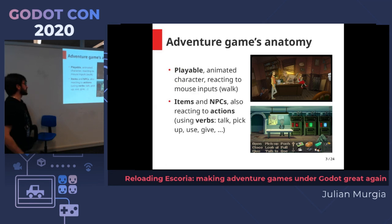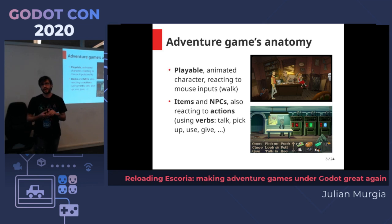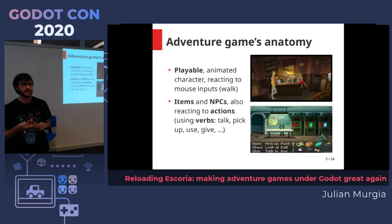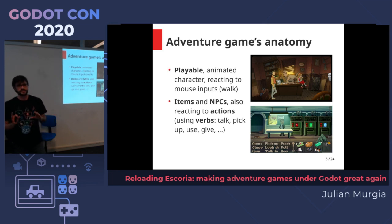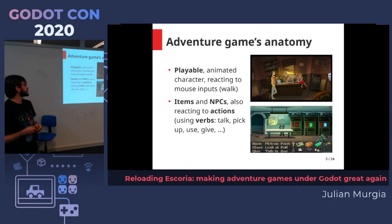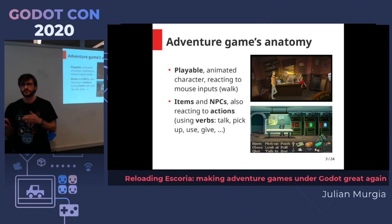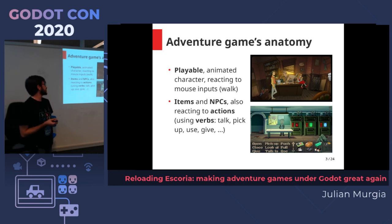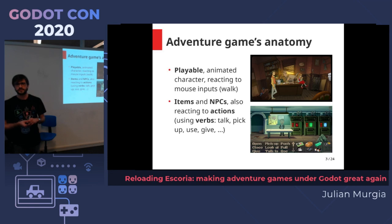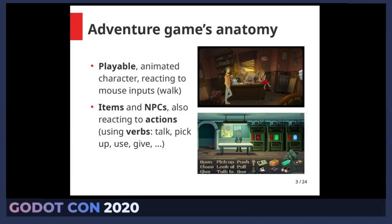What's a point-and-click adventure game, at least in 2D? Basically, a few elements you'll find in almost every kind of 2D adventure game: a playable, usually animated character reacting to user inputs — walking across rooms, going point-to-point. You also have items and NPCs to talk to, items to pick up, maybe in an inventory. Those items and NPCs react to actions — you can talk, pick up, use, give items, and other actions you want to create.